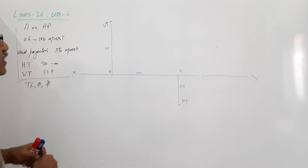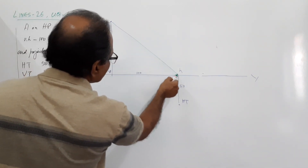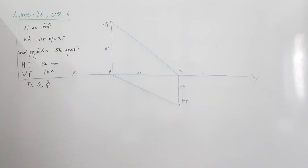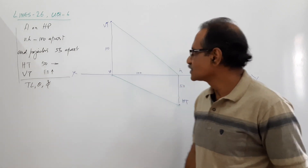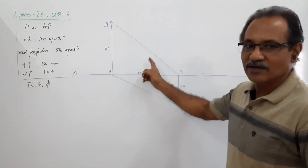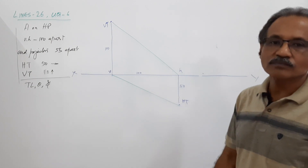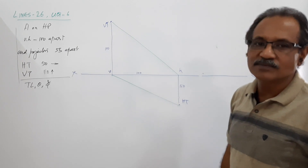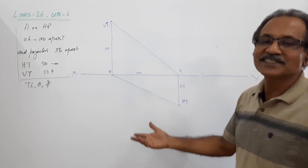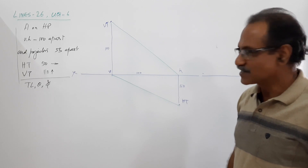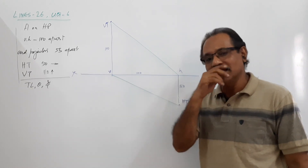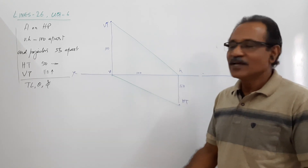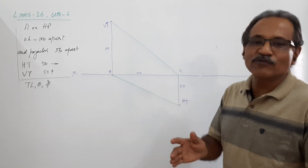VT and HT can be connected, and V and HT can be connected. The line connecting VT to HT contains the elevation, and the line connecting small V to HT contains the plan. Your task is to find out where points A and B lie on these lines.